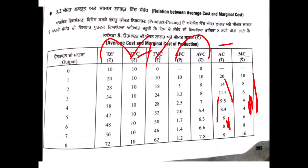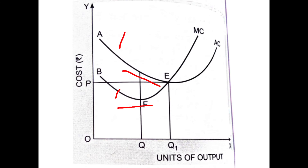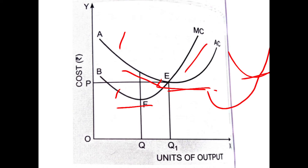Where marginal cost minimum is 8 and both curves are the same, the average cost minimum is cut by marginal cost. Marginal cost, when it is at its minimum, cuts the average cost curve. The marginal cost curve crosses the average cost curve at the average cost's minimum point.